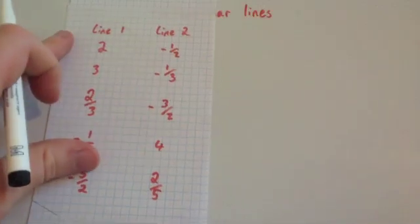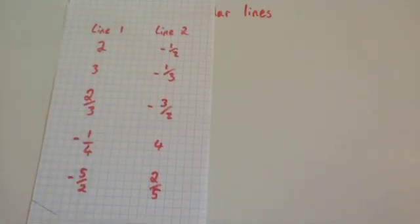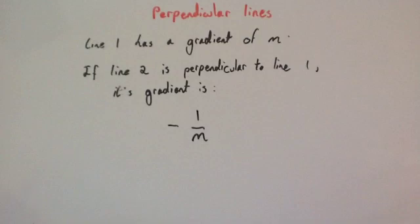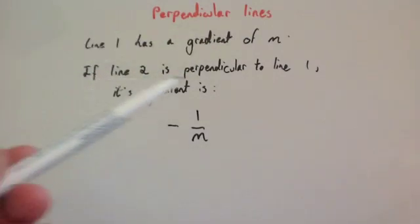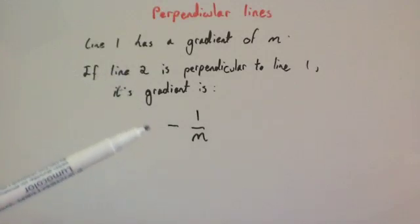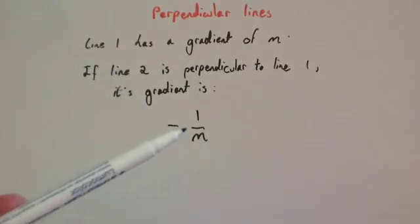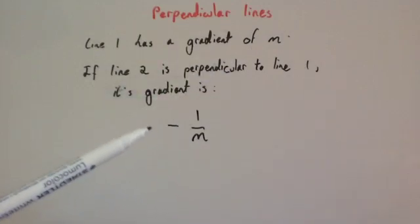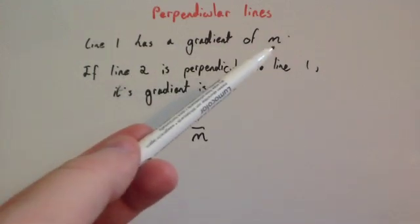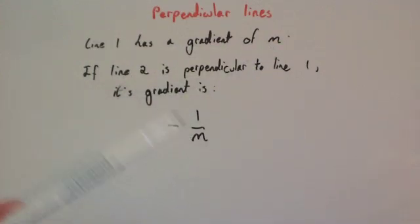We're also changing the sign — if one line is going up, the other has to go down. So whenever you've got two lines that are perpendicular to each other, the gradients will be the negative reciprocal of each other. The rule is: if line one has a gradient of m, then a line perpendicular to it has a gradient of minus one over m. You take the reciprocal of the gradient and multiply by minus one. If the gradient of the first line was negative, you take the reciprocal and make it positive — in other words, take the reciprocal and change the sign.